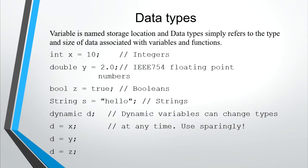Data types. A variable is a named storage location, and data types simply refer to the type and size of data associated with variables and functions. There are five data types available in DART programming language: integer, double, boolean, string, and dynamic.